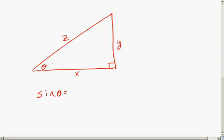If I go across the triangle, which leg doesn't touch theta? And that's y. So y is the opposite leg.